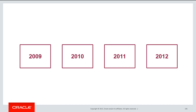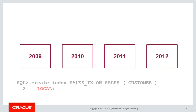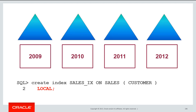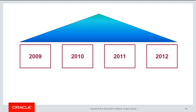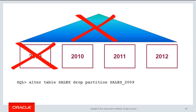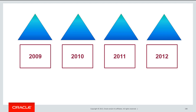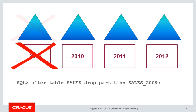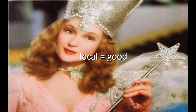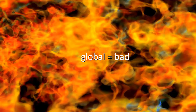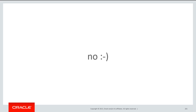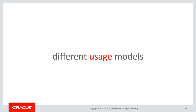As a quick recap, we saw that a global index spans all the partitions, and we saw that a local index creates a partition for each table partition. We also noted that when we drop a partition for a global index, the entire index gets made unavailable, whereas if we do it for a locally partitioned index, dropping a table partition only affects the relevant partitions. This might lead you to thinking that local indexes have all just been a good story and that global indexes have just been a bad story, and therefore you should never use them. That's not true. If local indexes were better in all cases, global indexes simply wouldn't exist. The reason we have both is to handle the different usage models that you might require when you're building applications.